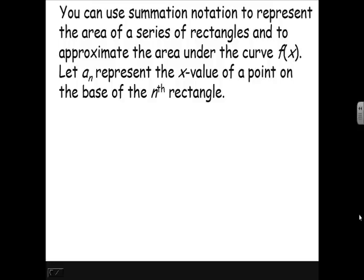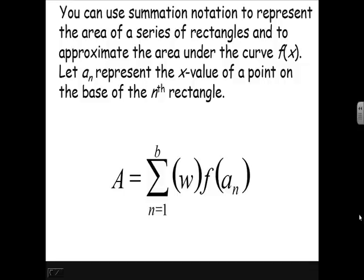We're going to let a sub n represent the x-value of a point on the base of the nth rectangle. The area equals the sum from n equals 1 to b of our widths times all of our f of x's, or a sub n's — these represent heights. So b is the number of rectangles, w is the width of each rectangle, and it's nice to keep that uniform. f of a sub n is the height of the nth rectangle.